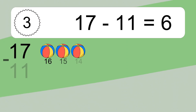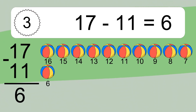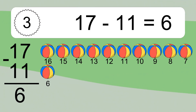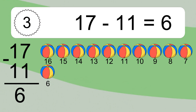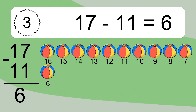17 minus 11 equals what? 17 minus 11 equals 6. Let's count it: 16, 15, 14, 13, 12, 11, 10, 9, 8, 7, 6.